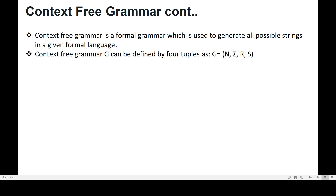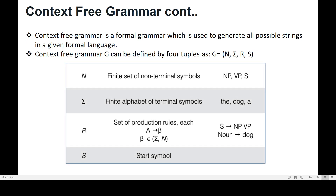Context-free grammar is a formal grammar used to generate all possible strings in a given formal language. A context-free grammar can be defined by four elements: N, Σ, R, and S. N is the finite set of non-terminal symbols, Σ is the finite set of terminal symbols — sometimes called the lexicon — and R is the set of production rules.